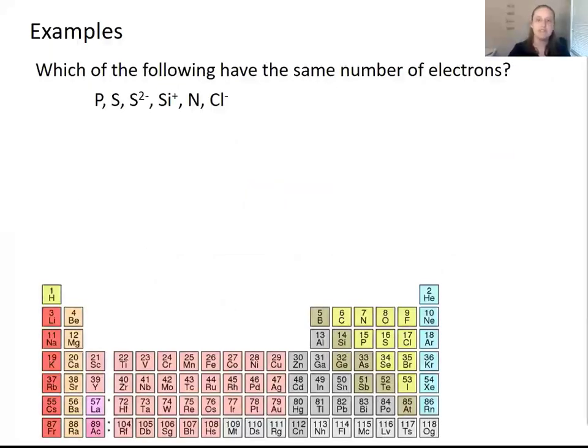So before we end, let's look at a couple of examples of things that you may need to do regarding the symbols for atoms and ions and isotopes. So first of all, let's look at this problem. Which of these species has the same number of electrons? So I've given you a sort of simplified periodic table here. Our first atom is phosphorus. Phosphorus is found in this third row of the periodic table and has 15 electrons. So I'm just going to write the number of electrons it has. It's neutral, it just has 15 electrons.